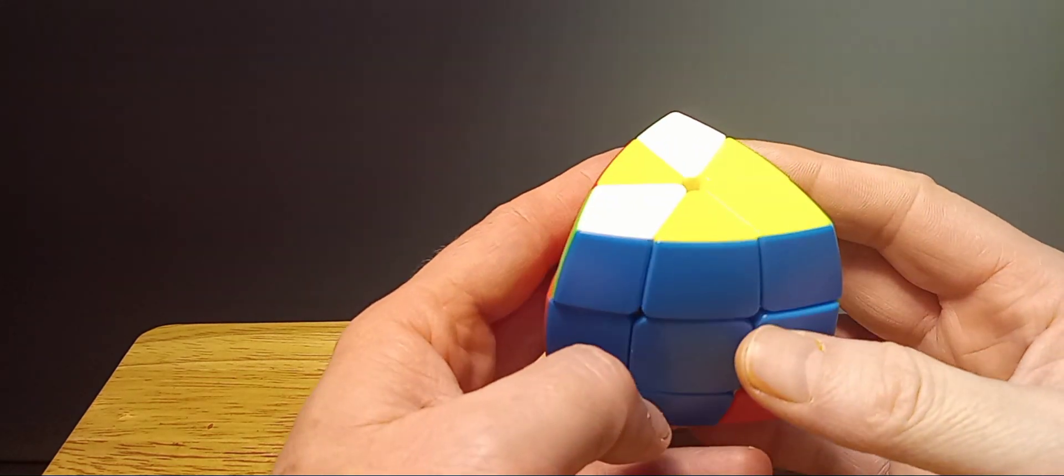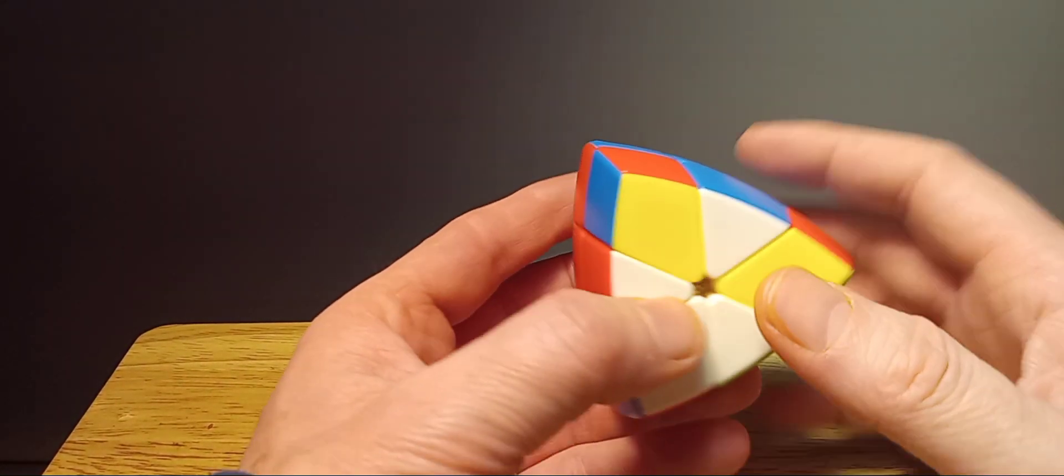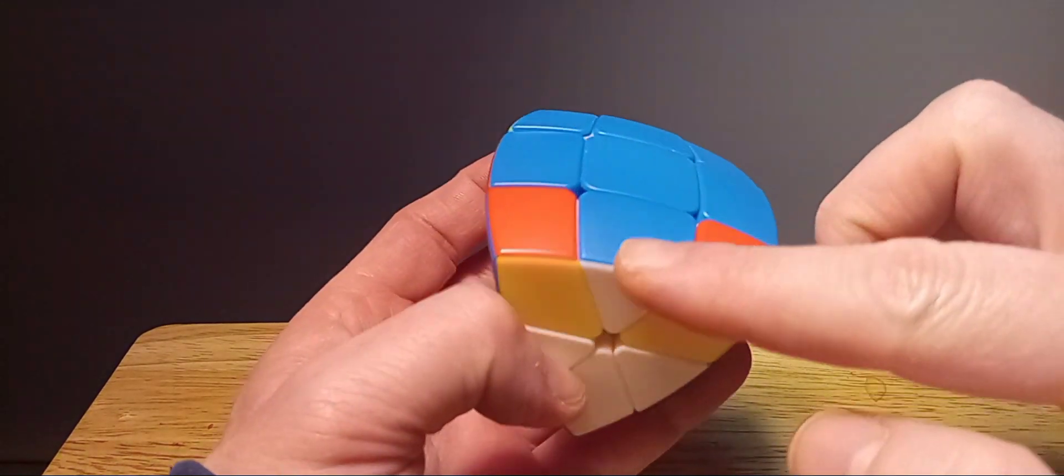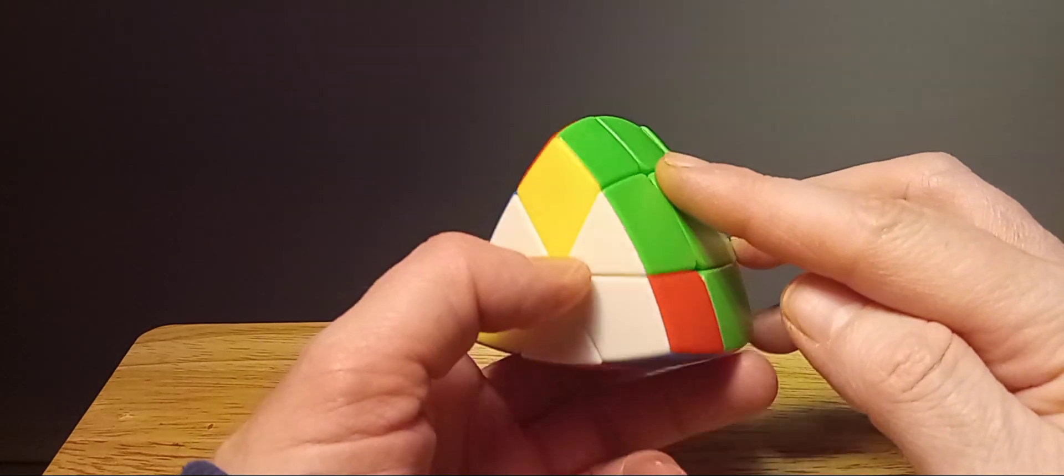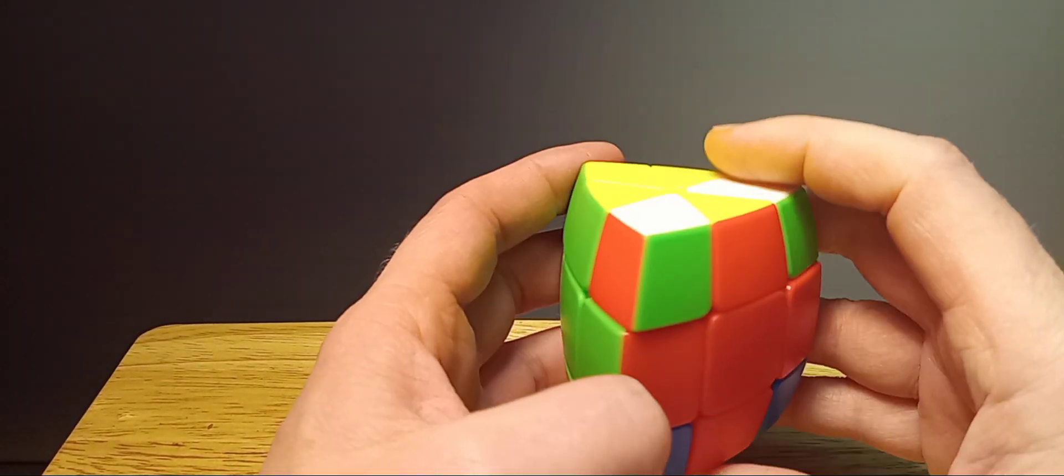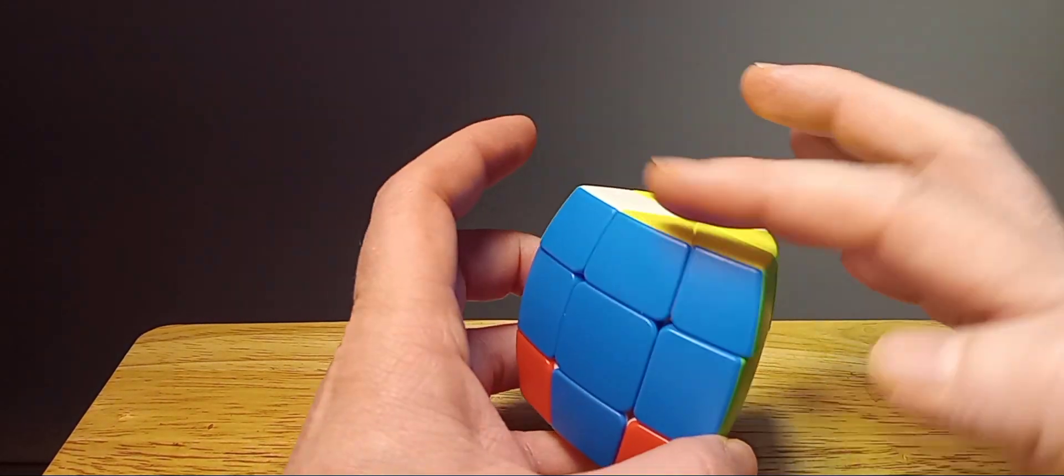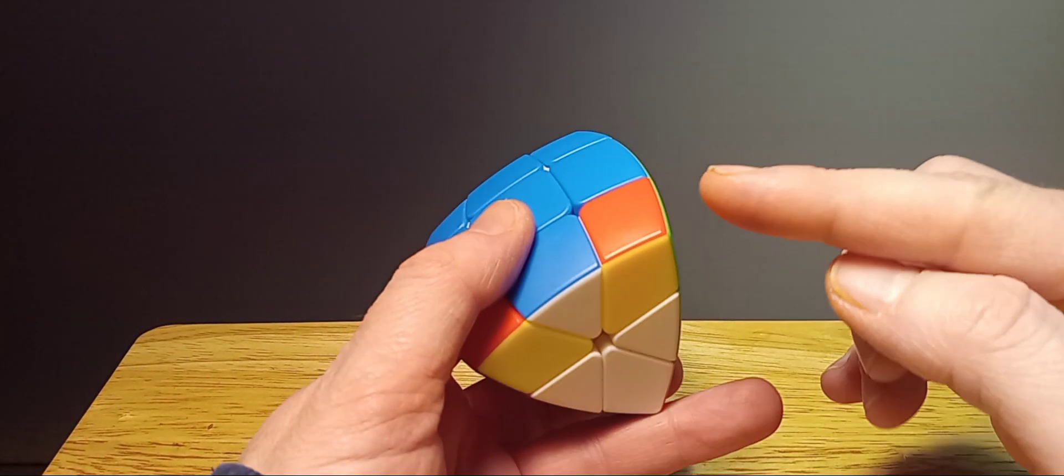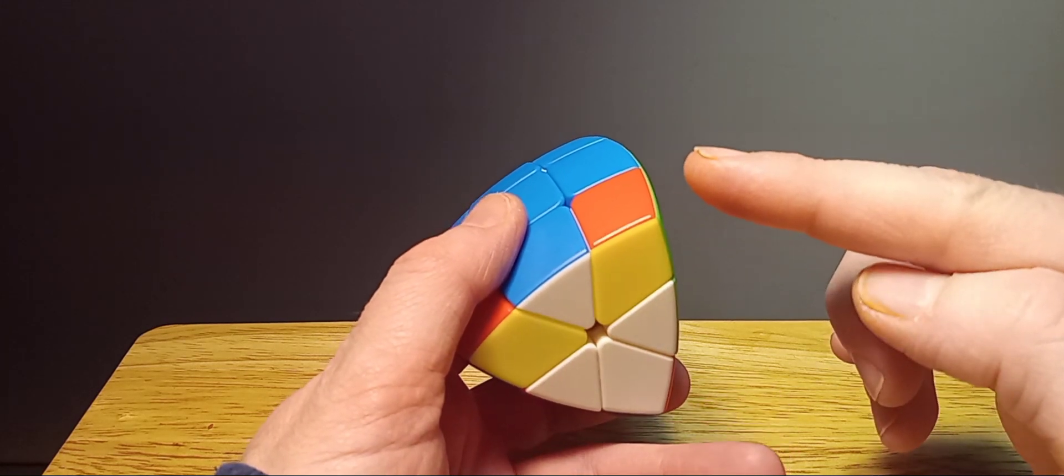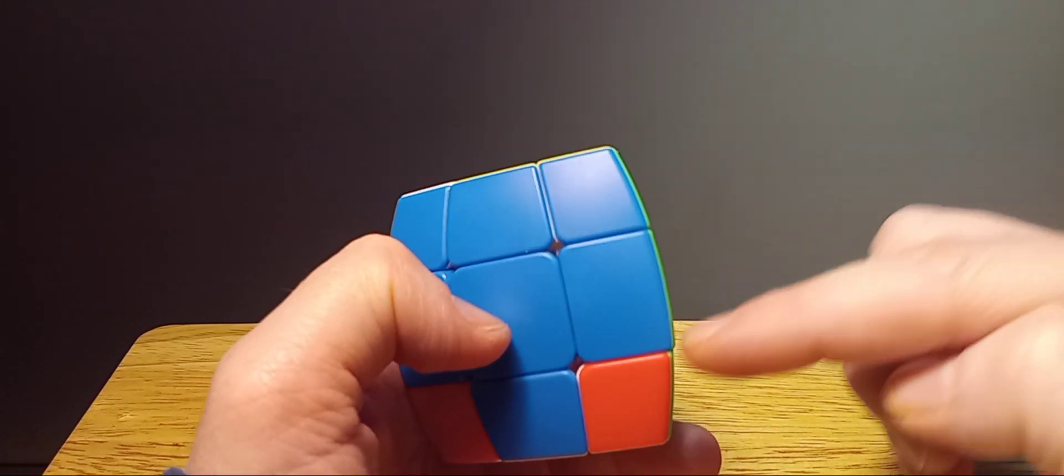In my last video, I showed you how to solve these edges to match up with the centers - the whites on the bottom like that, and then the yellows on top, these yellow edges all the way around. Now I'm going to show how to put in these corners to match, so these are solved on the bottom.